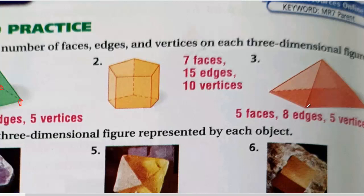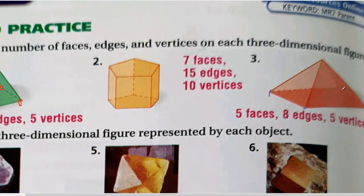How many edges? On the bottom we have one, two, three, four — four edges. Then going up: one, two, three, four — four more. So four plus four is eight edges. How many vertices? We count one, two, three, four, five — five vertices.